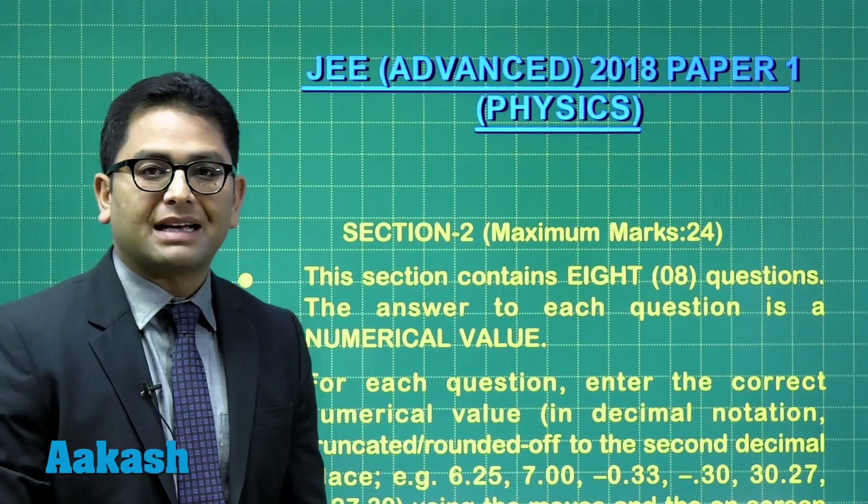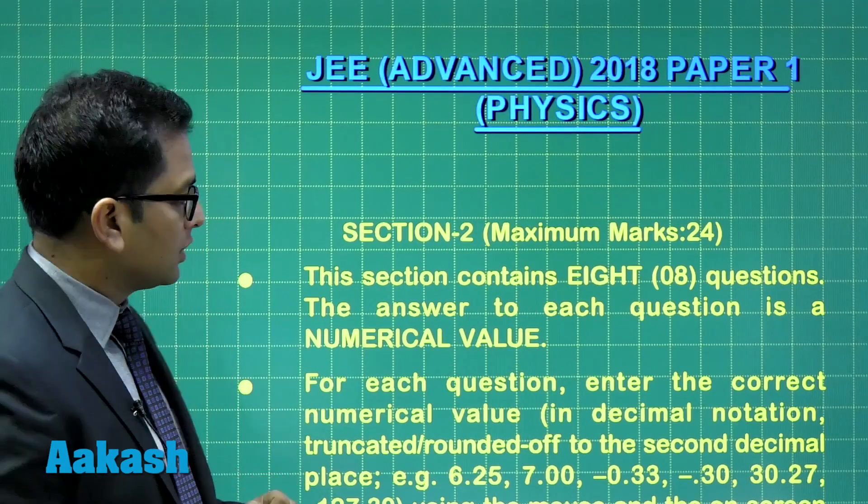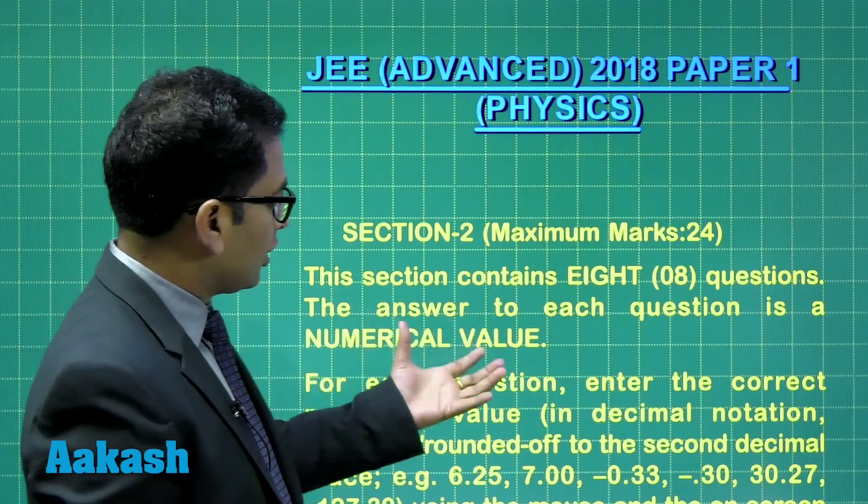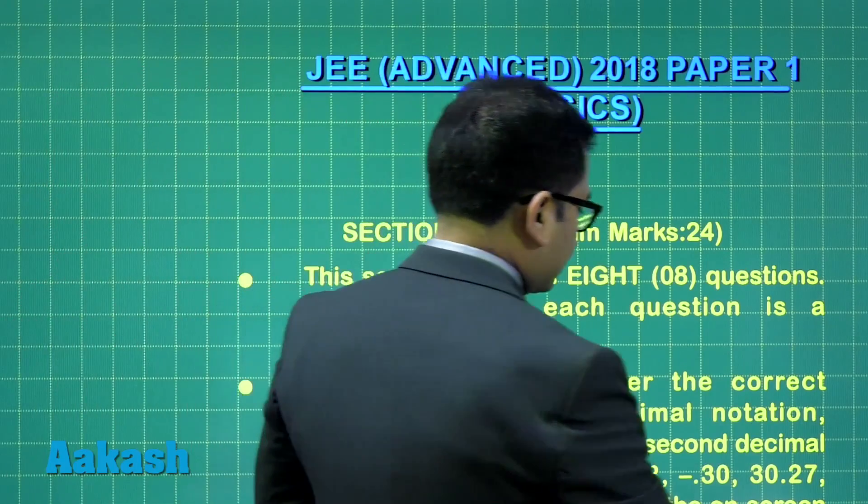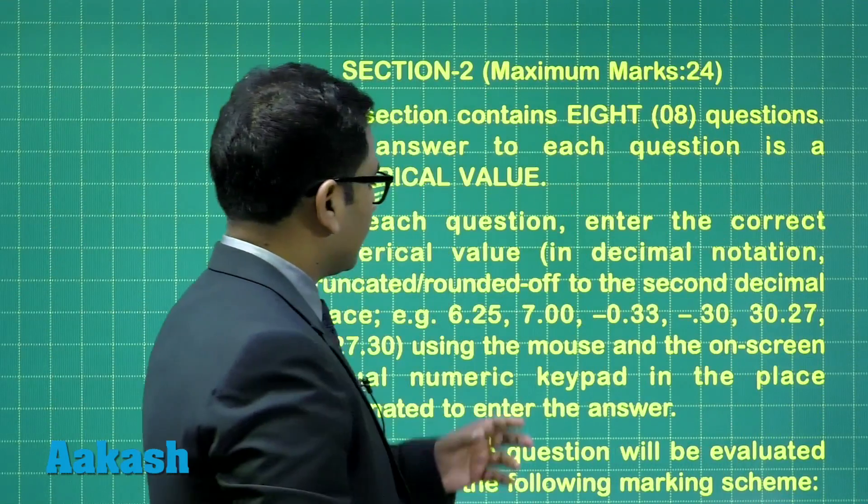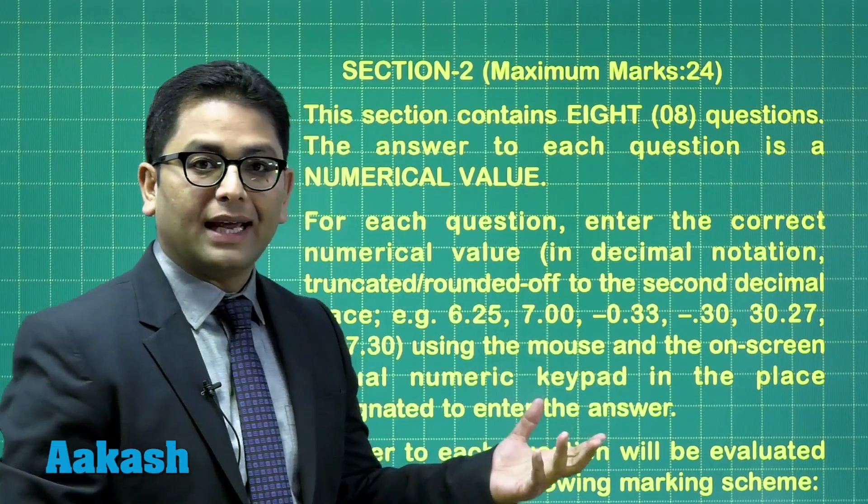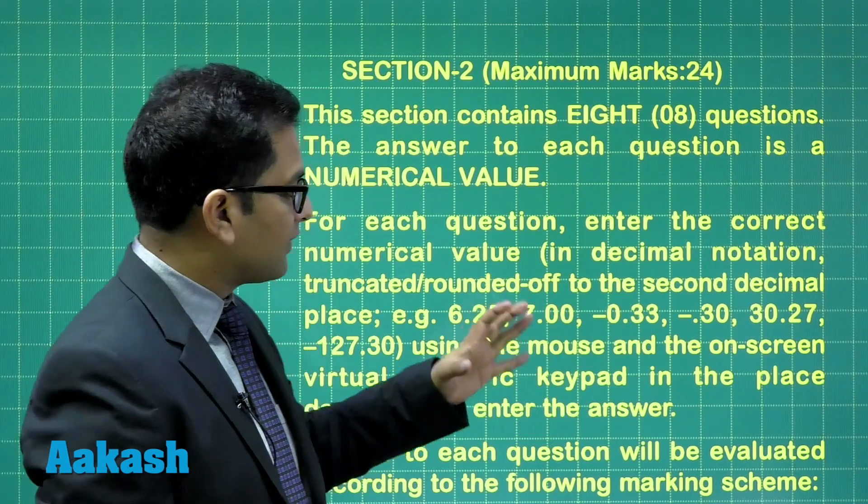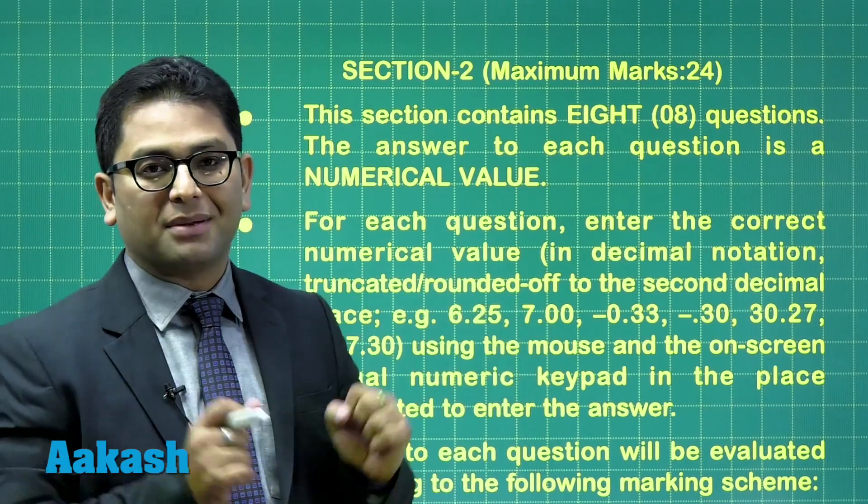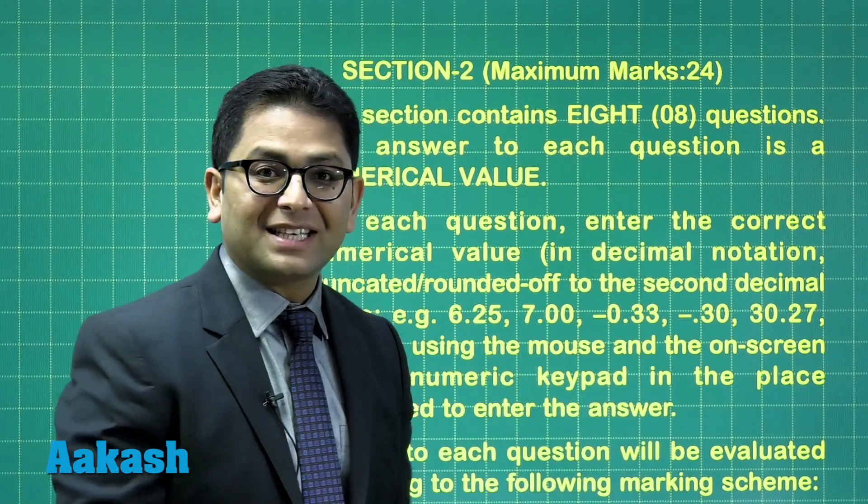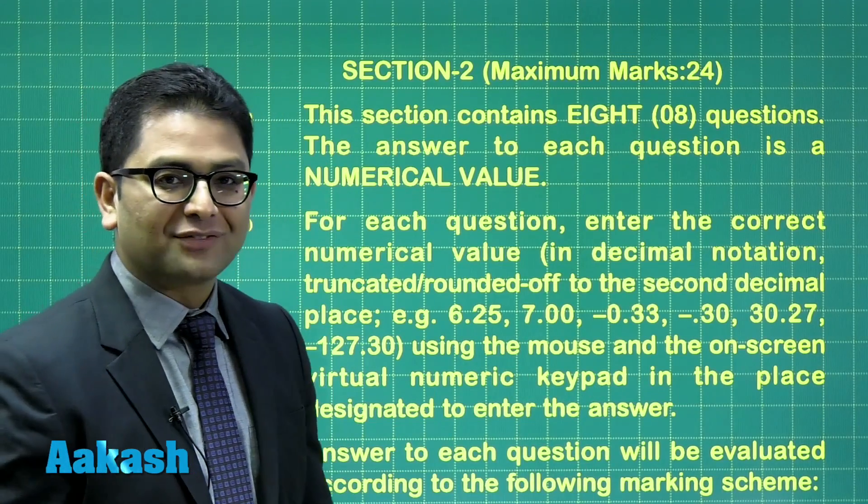With question number seven, we enter section two, which has a total maximum of 24 marks. This section contains numerical value questions, what we generally call integer-based questions. But this is different - the remarkable thing is, negative values are also allowed, and two digits after decimal. So this time, regular guesswork will be highly minimized. Since it was done in CBT mode, you can use the virtual numeric keypad.